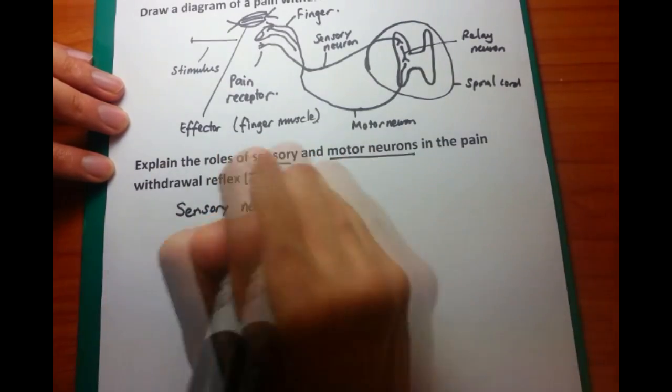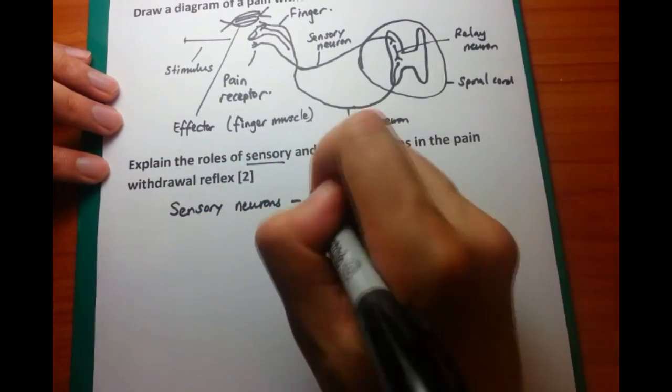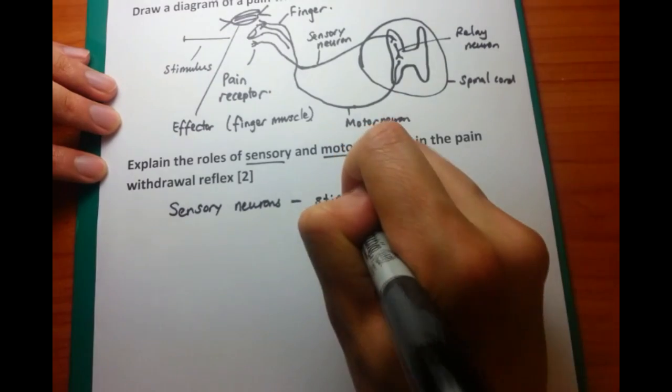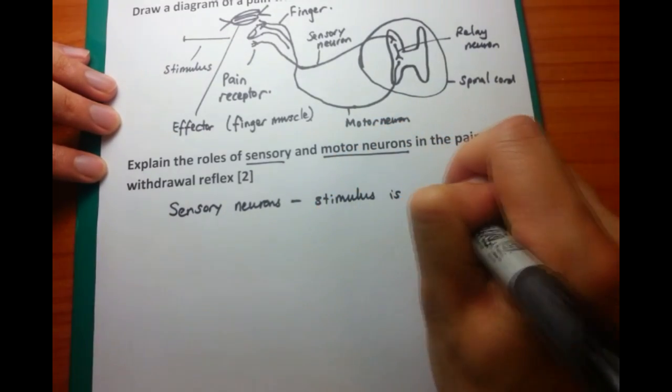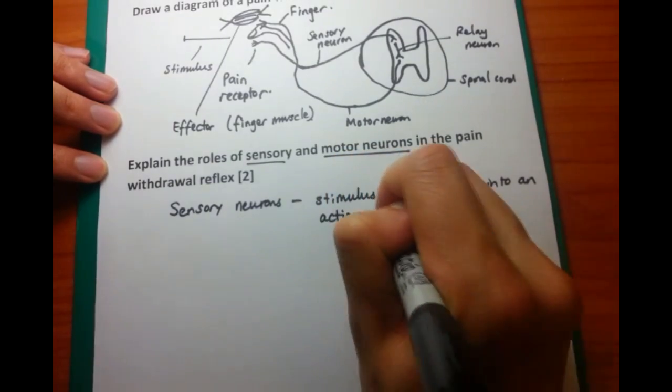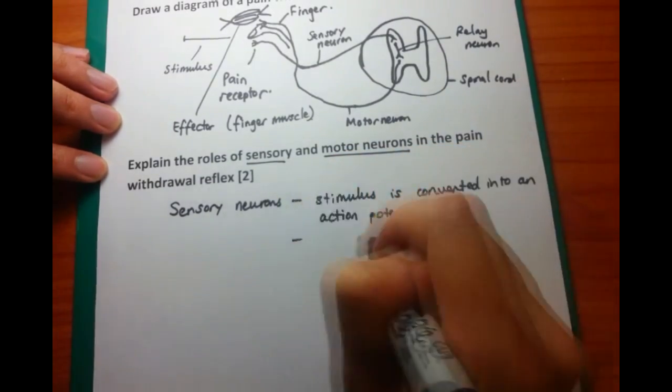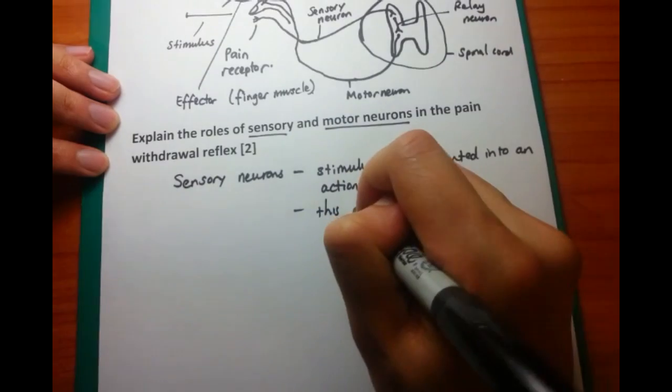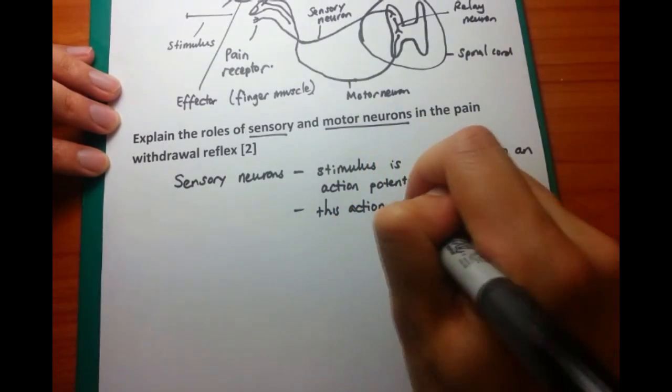Third question. Explain the roles of sensory and motor neurons in the pain withdrawal reflex. So this pain, the pain stimulus, which is the stimulus at the start, is converted to an action potential, or converted to a message which can be carried along by the sensory neuron to the spinal cord.